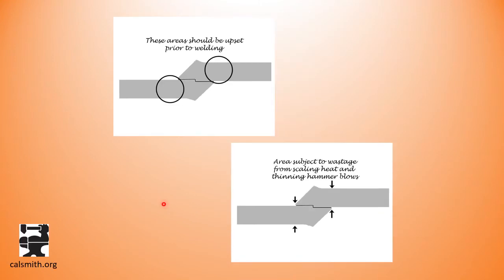The second modification you will need to make to your scarf for a drop tong weld is to make sure that you have enough material in the neck before you start your weld, so that you can stand to lose a little from the high heat scaling and possibly an errant hammer blow that would make this thinner.